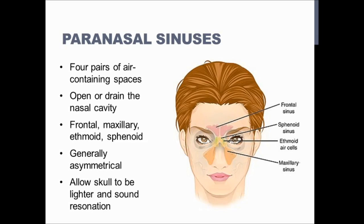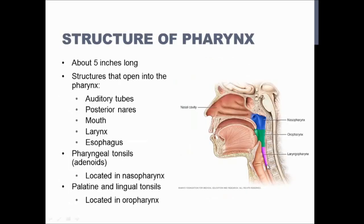The pharynx is your throat. It's about five inches long and has three different segments: the nasopharynx, the oropharynx, and the laryngopharynx. The hard palate is the bony structure forming the roof of the mouth, and the soft palate is more muscular and connective tissue. The nasopharynx ends where the soft palate ends, and it becomes the oropharynx. The oropharynx ends about where the larynx begins, and then the pharynx travels on to become the esophagus.